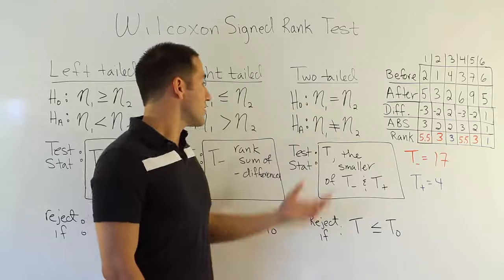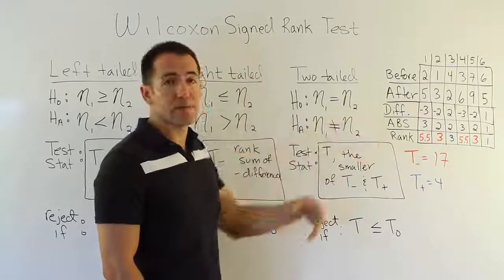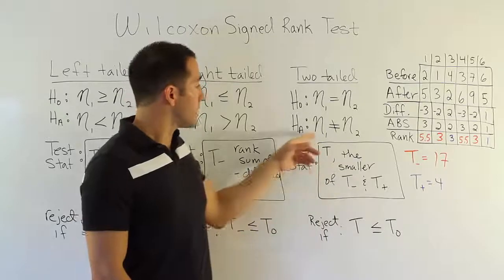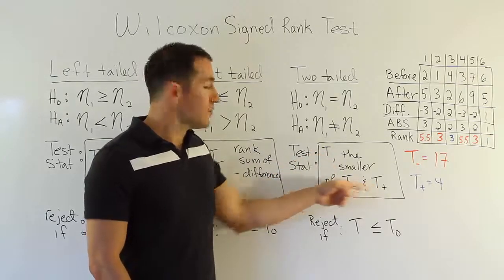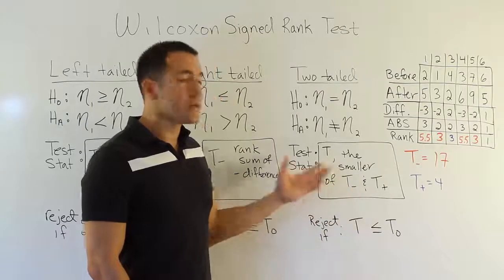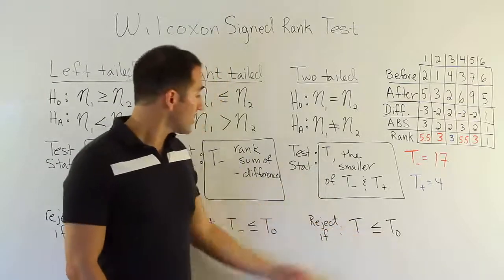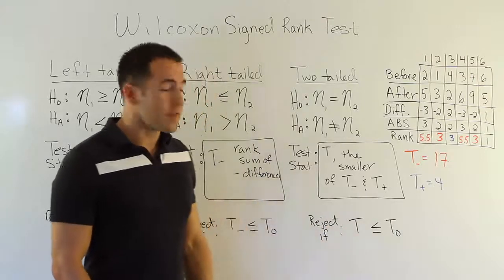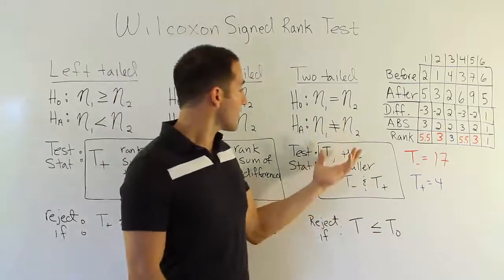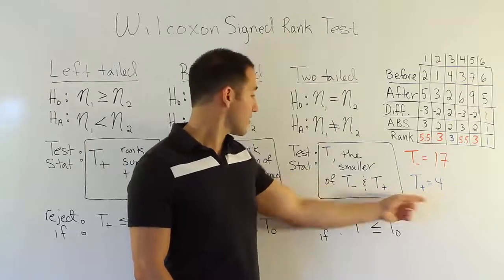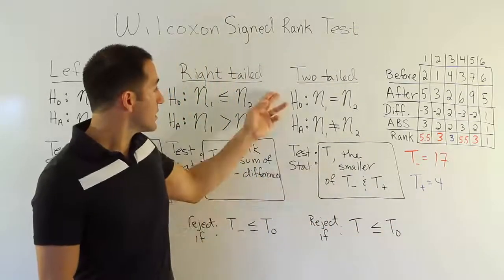In the two-tailed scenario, you're just saying there's a difference — something happens between before and after; the exercise regime does something, whether it makes it worse or better. In that case, T is your test stat, defined as the smaller of the two totals — T negative or T positive. Whichever is smaller becomes your test stat, and we're always looking for it to be significantly small compared to the critical value. We reject if T is less than the table value. In this case, we would choose T positive because that total is smaller, and if it's less than the critical value, we reject H0 and support HA.